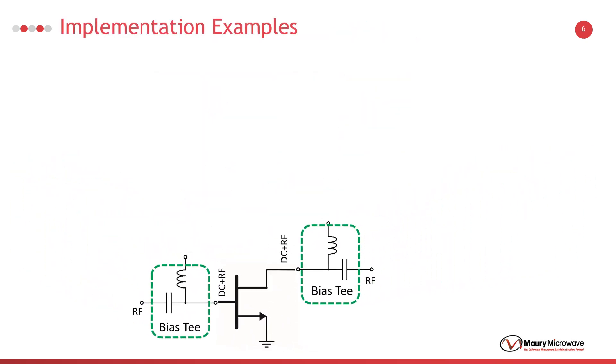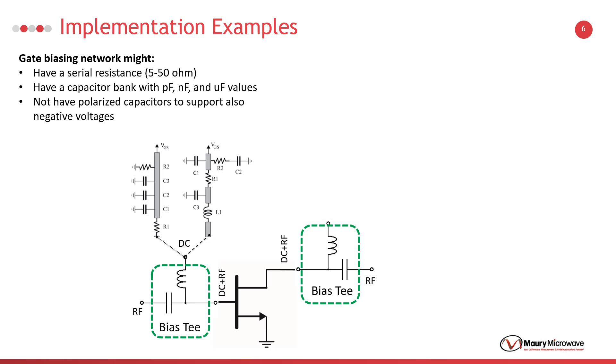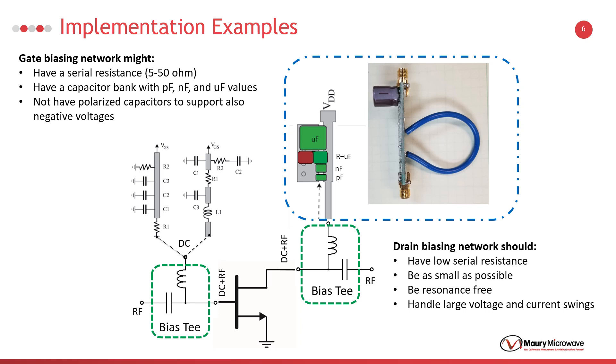If measuring with continuous DC, we can implement additional components to the bias tees. For example, we can use an additional network to the input biasing consisting of a serial resistor and a capacitor bank having nanofarad and microfarad value shunt capacitors. This network will provide a resistive termination in the low frequency range for the input of the device under test as mentioned in previous slides. It is also recommended to have a capacitor bank at the output bias T. If using a cable extension for the current probes, pulsed RF measurements can still be performed. It is essential to place this cable after the capacitors.